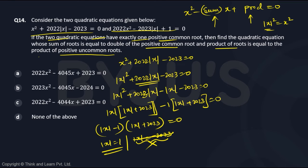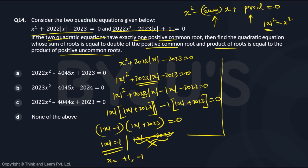Here you have two possible values of x. Since |x| = 1, x can be +1 or −1. Writing both individually: the roots of the first equation are +1 and −1. Now do the same analysis for the second equation too.